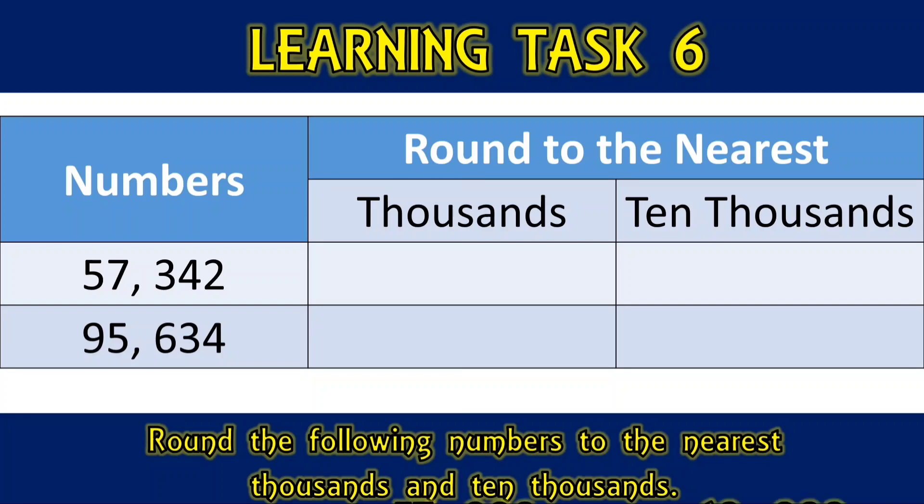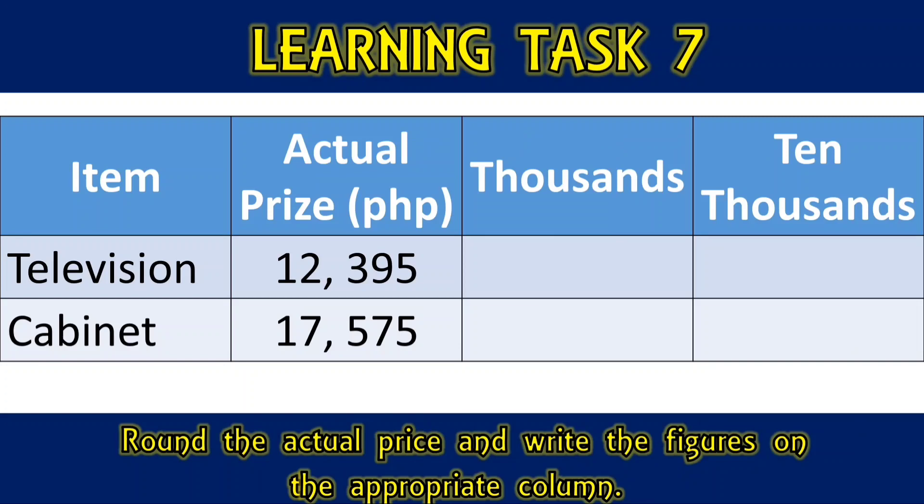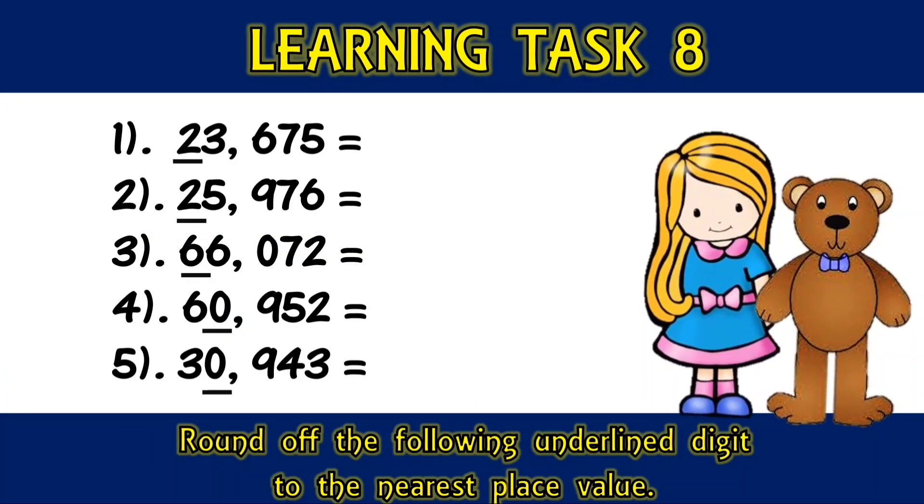Round the actual price and write the figures in the appropriate column. Television has an actual price of 12,395 pesos and Cabinet has an actual price of 17,575. Round off the following underlined digit to the nearest place value.